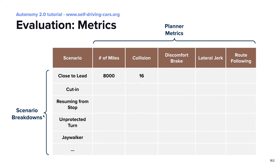For example, given this particular metric table, the scenario breakdown tells engineers that for the close-to-lead-agent scenario, after running 8,000 miles in the simulator, this planner disengages 16 times due to potential collisions. This type of detailed metric breakdown enables in-depth understanding of the failure modes for a given planner.